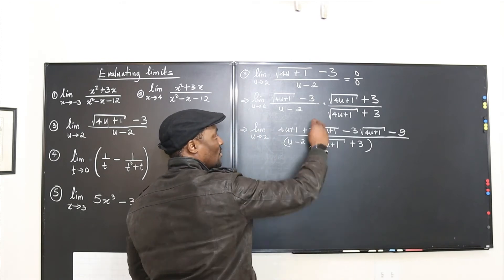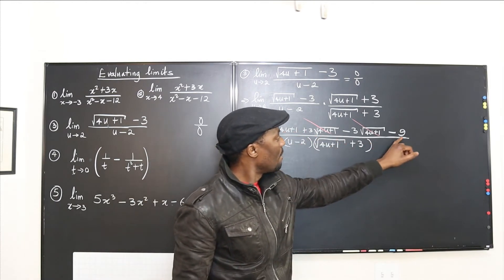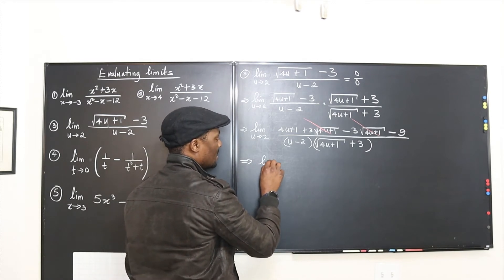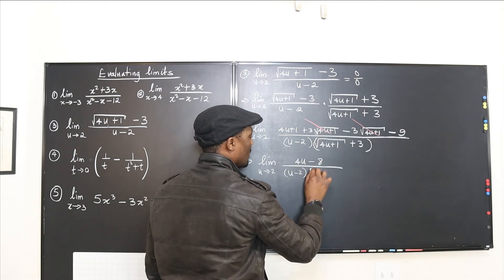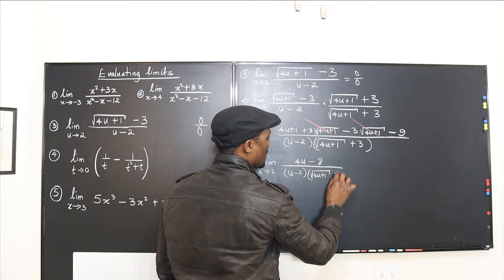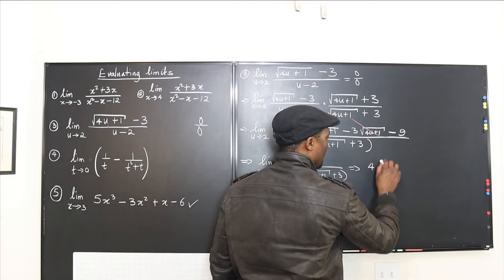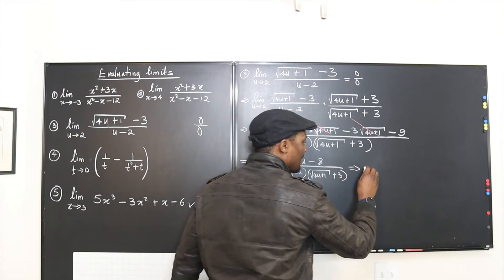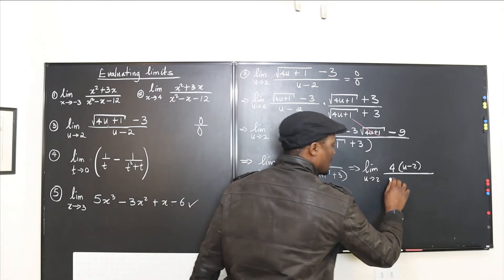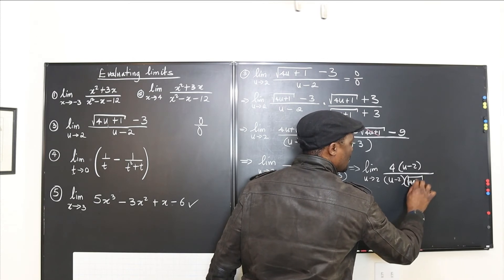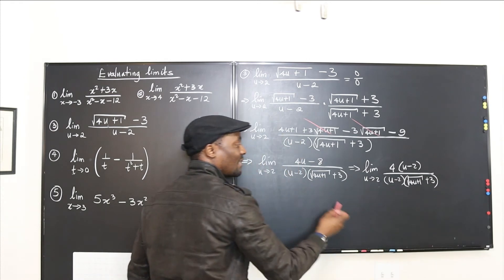We can now simplify: the numerator 4u minus 8 factors as 4(u minus 2). We then have the limit as u goes to 2 of 4(u minus 2) over (u minus 2) times (√(4u+1) plus 3). The (u minus 2) terms cancel — that's why we didn't distribute the bottom.